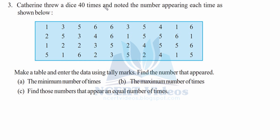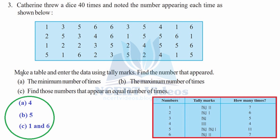Question 3: Catherine threw a dice 40 times and noted the number appearing each time. Make a table using tally marks and find: A) the number that appeared the minimum number of times, B) the maximum number of times, and C) numbers that appear an equal number of times. We make a table with columns: numbers, tally marks, and how many times.